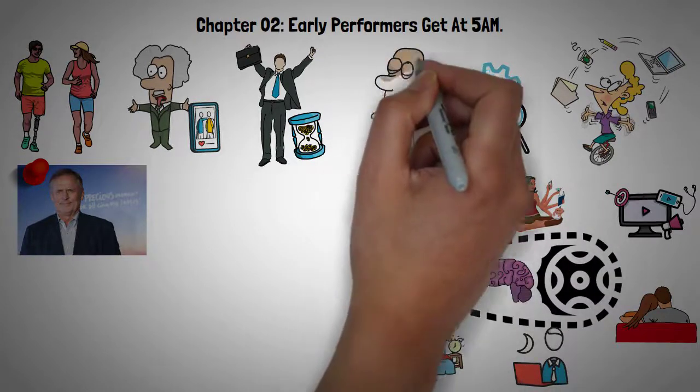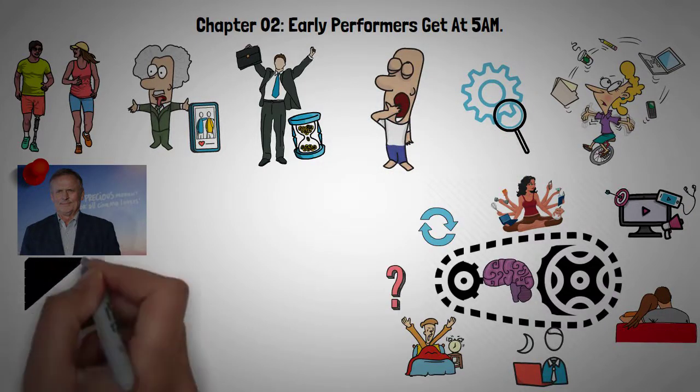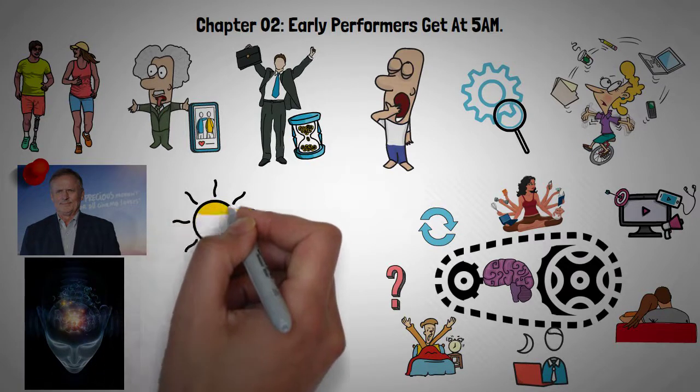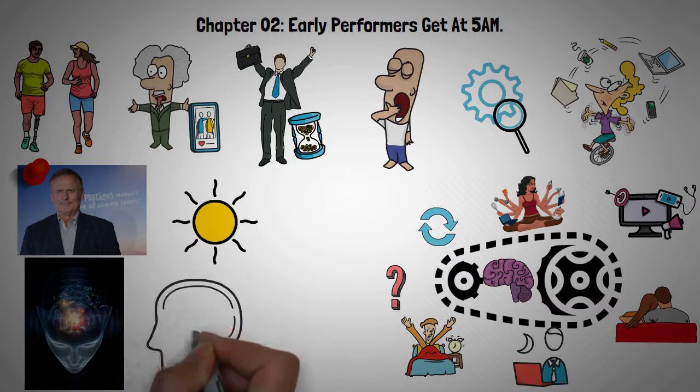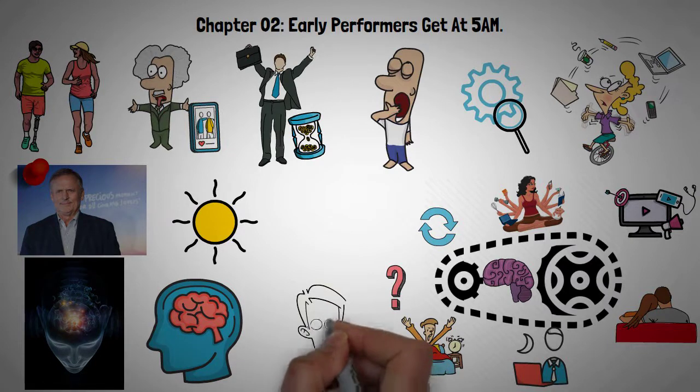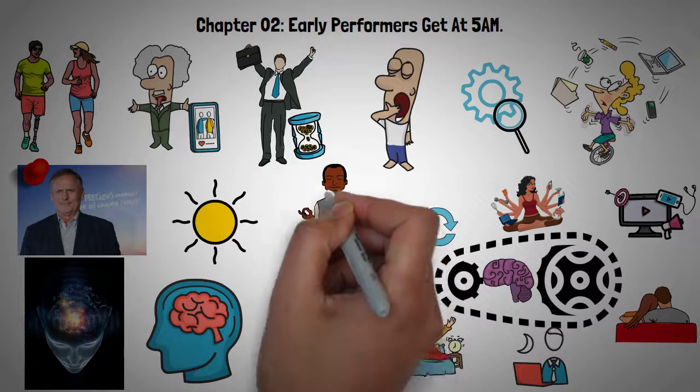But starting your day at 5 AM effectively hotwires your brain so you can maximize your focus. That's all thanks to the concept of transient hypofrontality. Put simply, this means that when you wake up at 5 AM, your brain's prefrontal cortex, which processes rational thought, is temporarily impaired. So if you typically start your day being plagued by worries, doubts, and fears, one advantage of getting up at 5 AM is the ability to temporarily silence them.